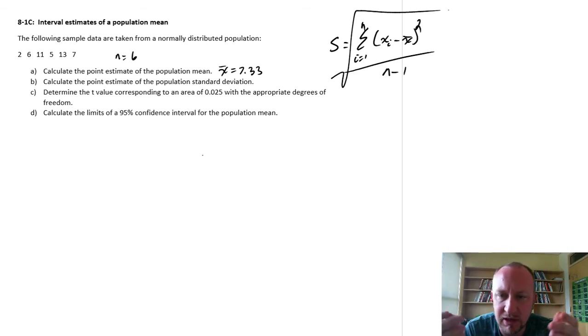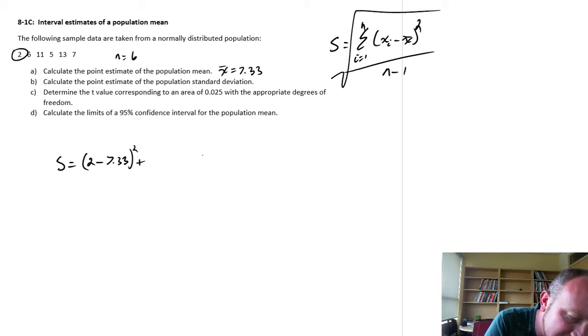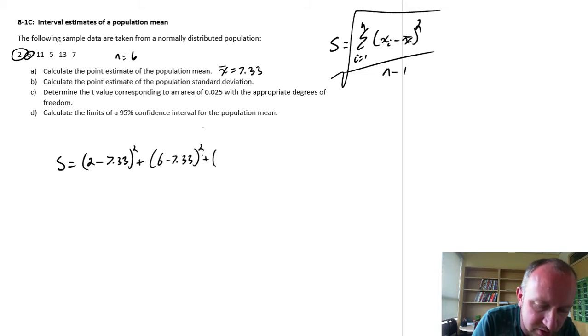If we didn't take the square root, that would be our sample variance. We want sample standard deviation. So we square root it. So what does that look like? Here we'll write all of this out. So our first observation, this is the two minus x-bar, so 7.33 squared, plus our next observation, six minus 7.33 squared. And we do this for all six of these.